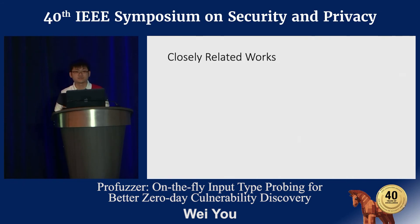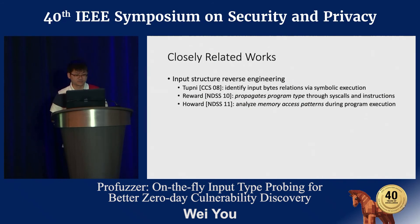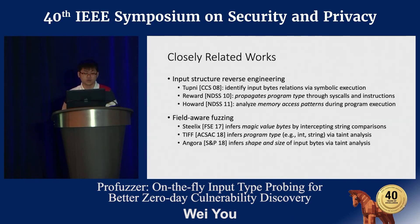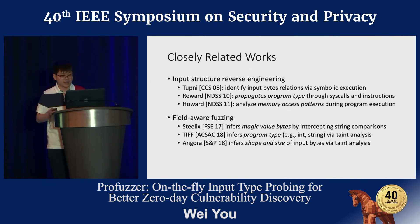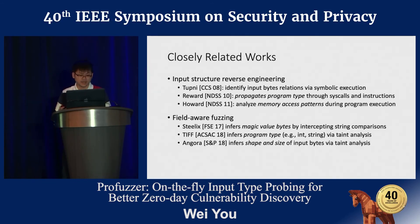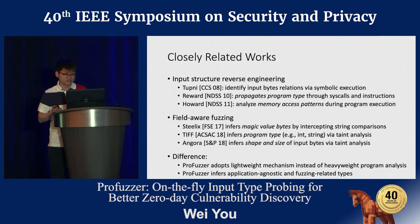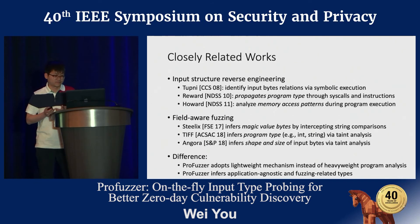We discuss differences between Profiler and closely related works. Some early studies reverse-engineer input structure offline using symbolic execution, type propagation, or memory access pattern analysis. Recently, field-aware fuzzing research has emerged, intercepting the type, shape, and size of input types. Different from these, Profiler includes a lightweight mechanism to discover relations between input bytes and program behaviors by observing execution path variations in response to input mutations, rather than using heavyweight analysis like taint analysis or symbolic execution. The types inferred by Profiler are application-agnostic and fuzzing-related.